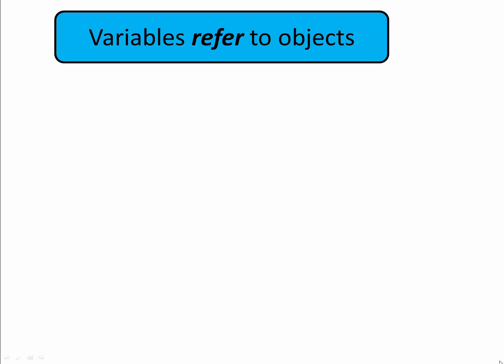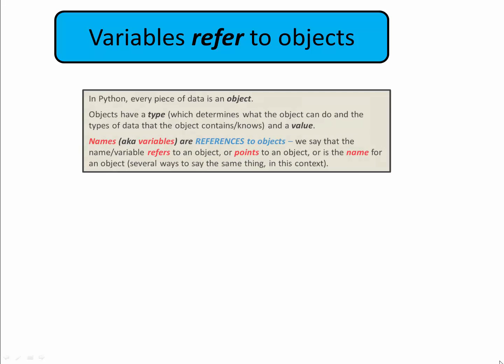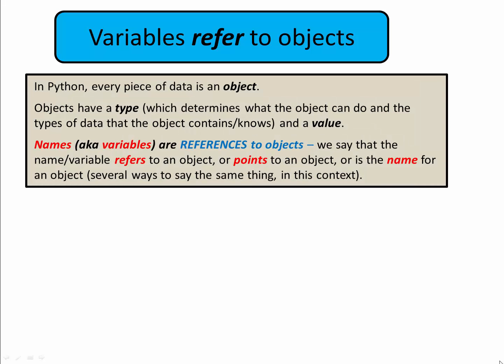Recall that in Python, every piece of data is an object. Objects have a type and a value. Names — that is, variables — are references to objects. We say that the name refers to an object, or points to an object, or is the name of an object. Three ways to say the same thing in this context.